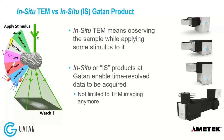I want to talk about in situ TEM and what that is, and also what do I mean by an in situ GATAN product. In situ TEM really means that we're observing the sample while applying some sort of stimulus to the material. That can be any combination of various stimuli, and I have some examples here in the diagram on the left. We want to observe the sample during that stimulus — this could be imaging, but it could also be spectroscopy that you're performing during the in situ stimulus.